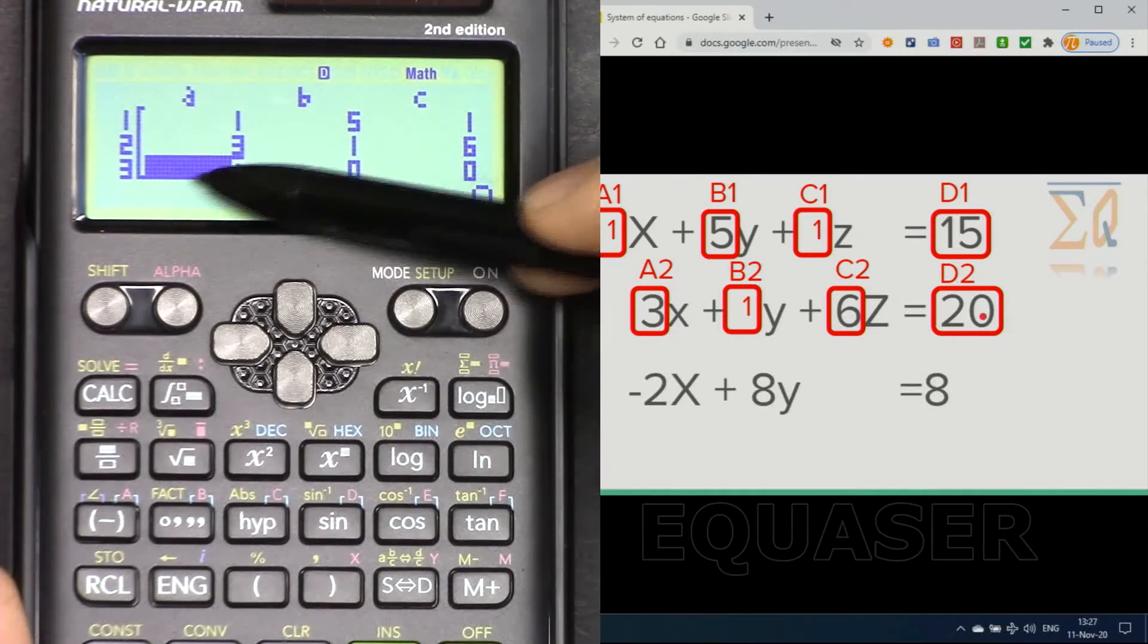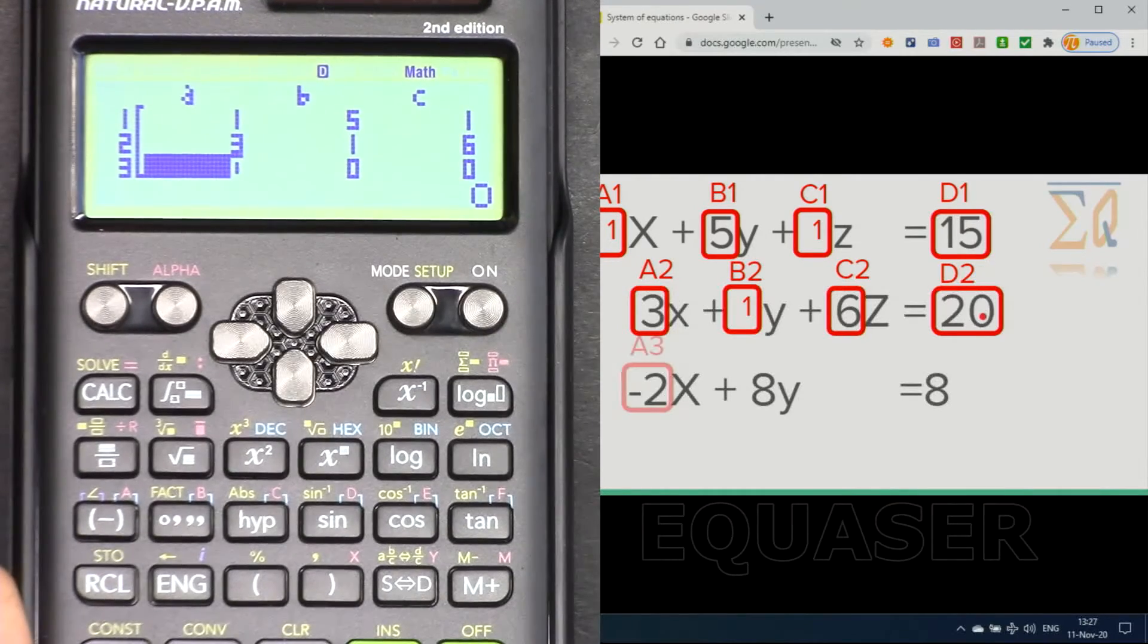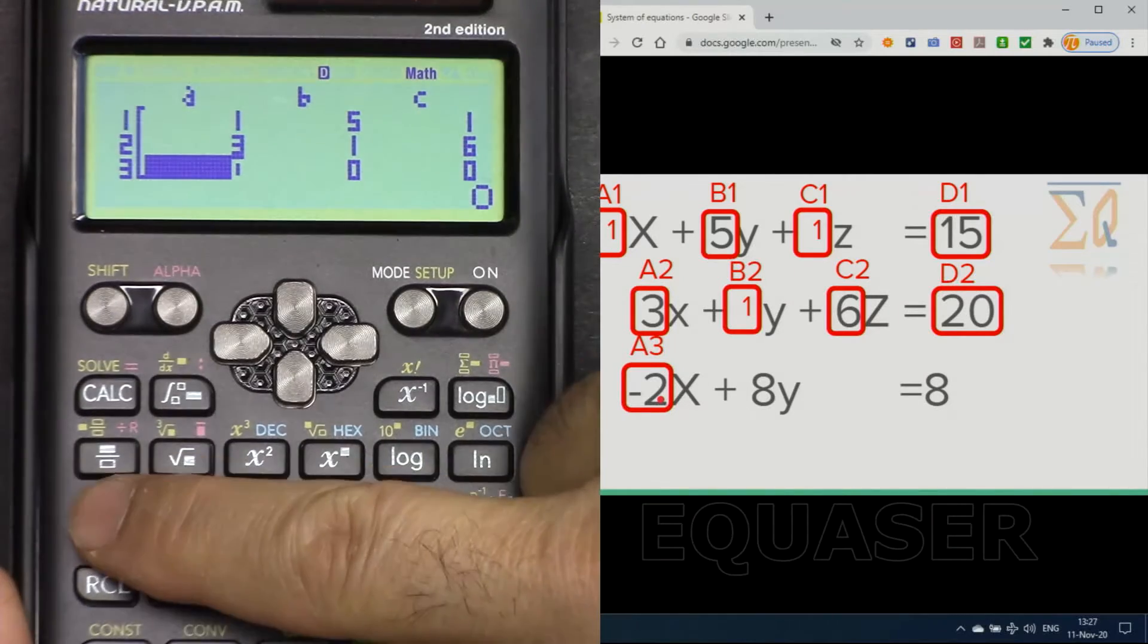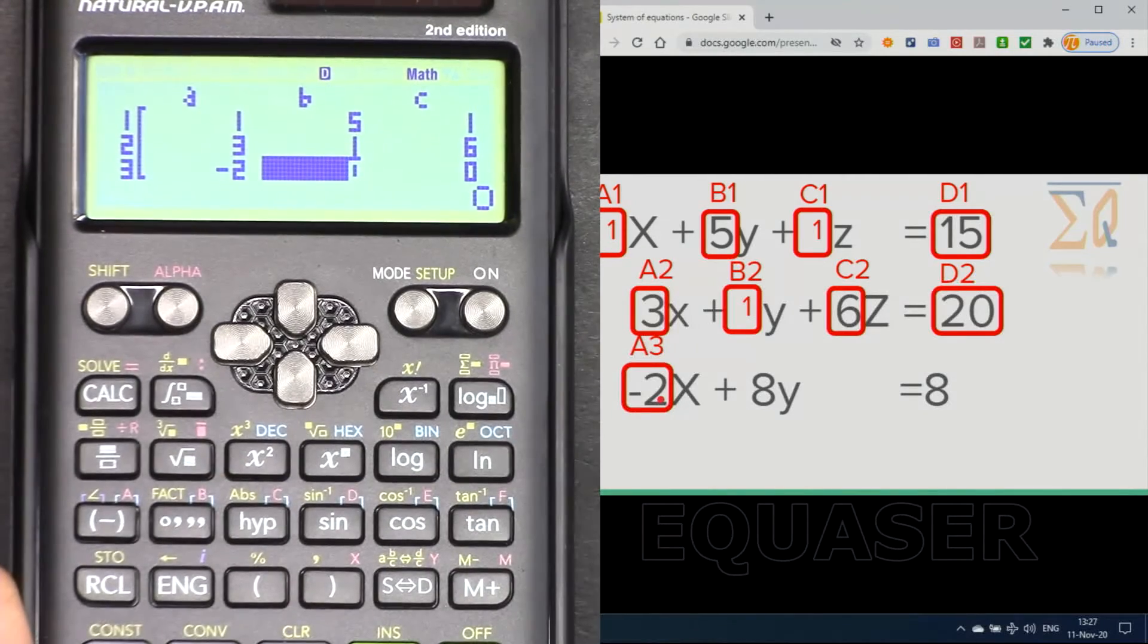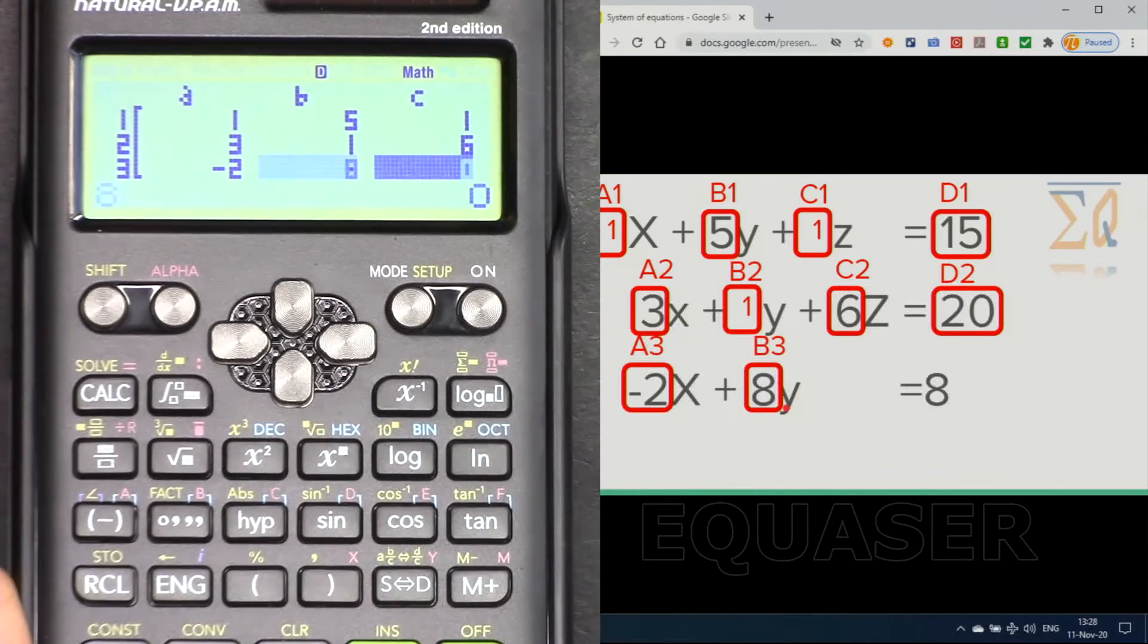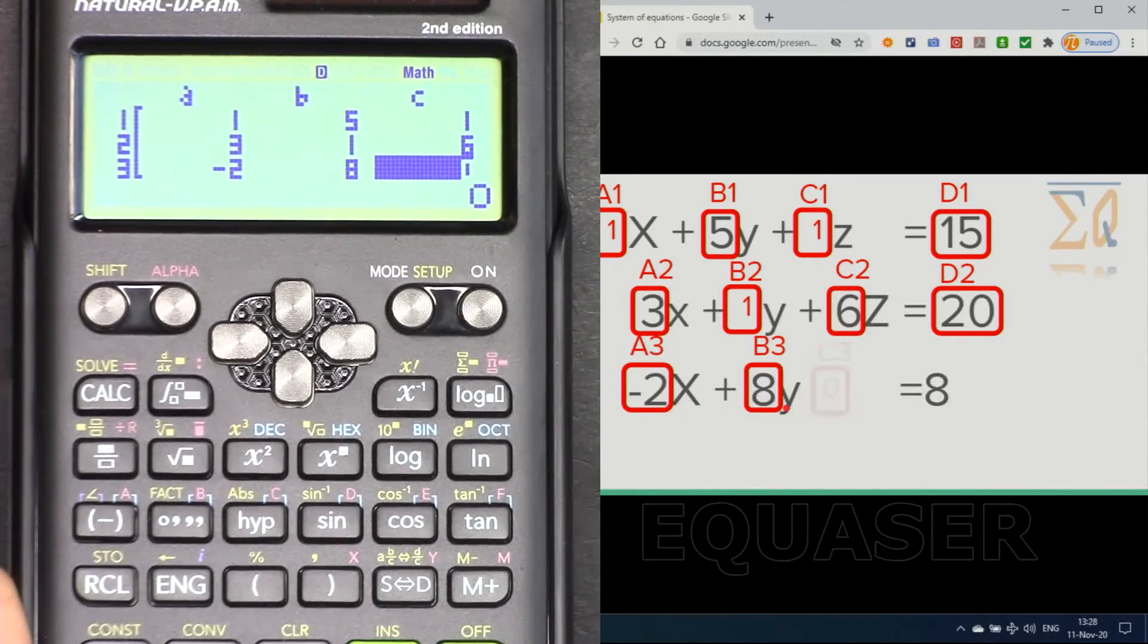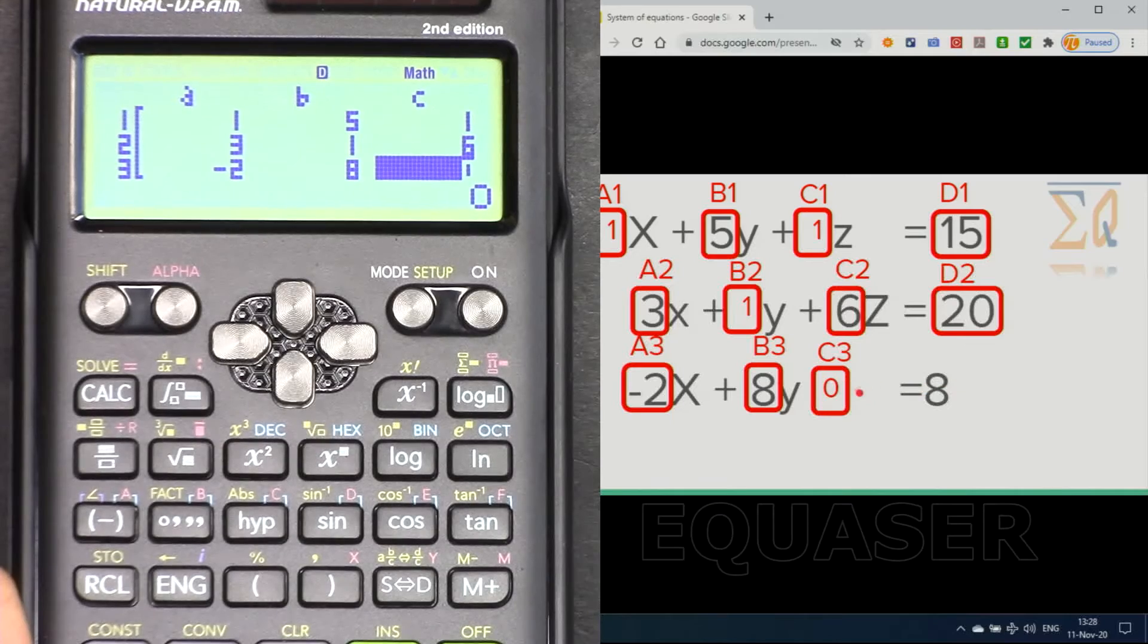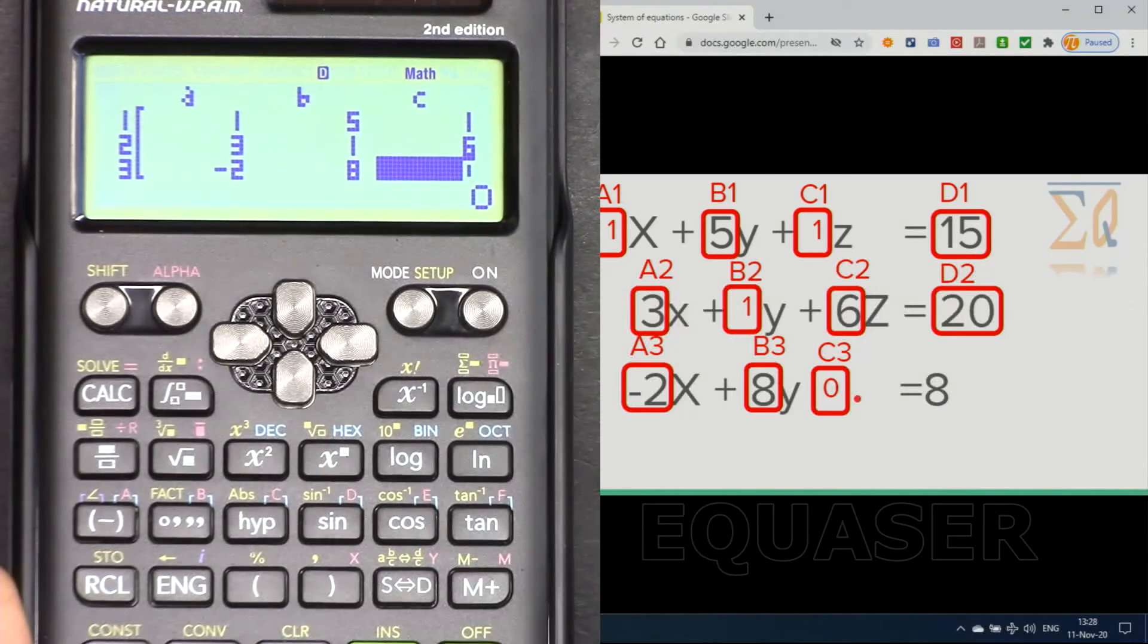For a, so a3 is minus 2. I'm pressing this minus and 2, equal. And b3 is 8, equal. And here c3, because we have no variable, it is 0. We must enter here 0 and then d3 is 8.